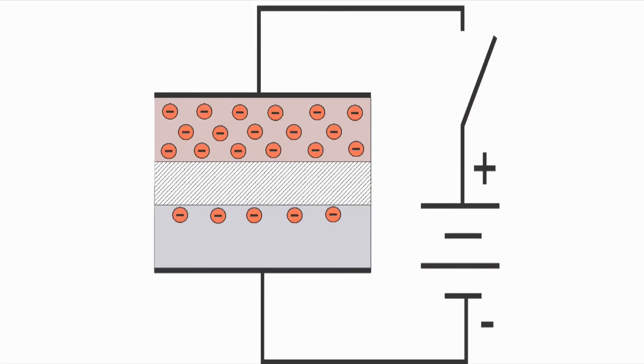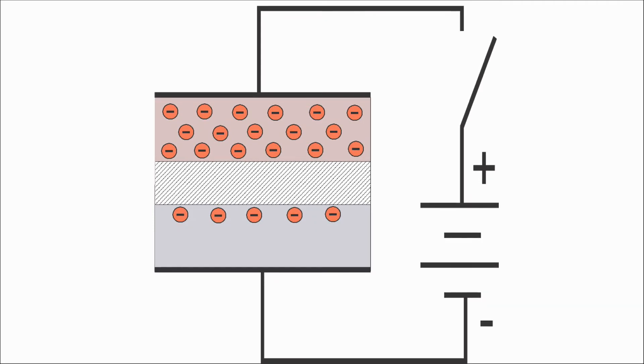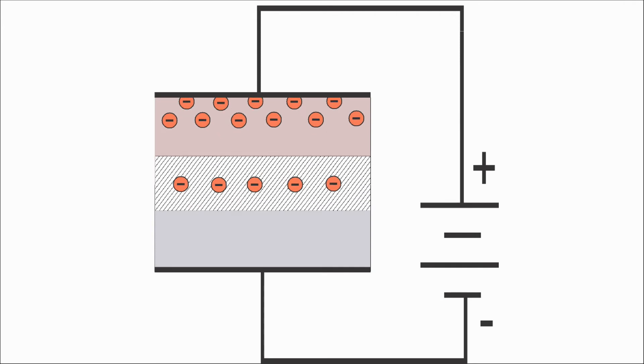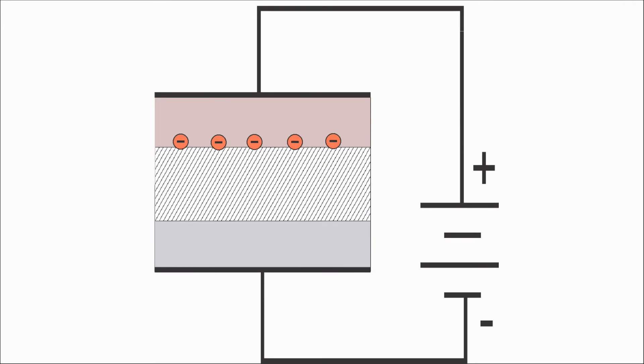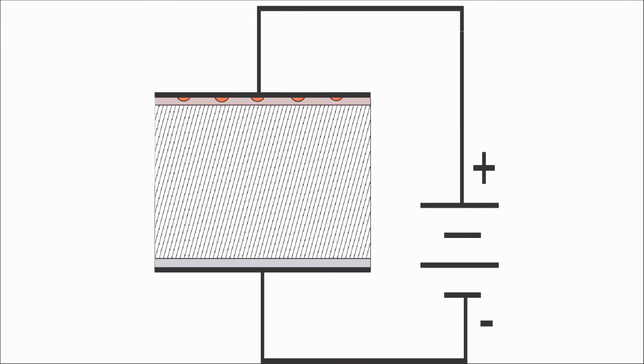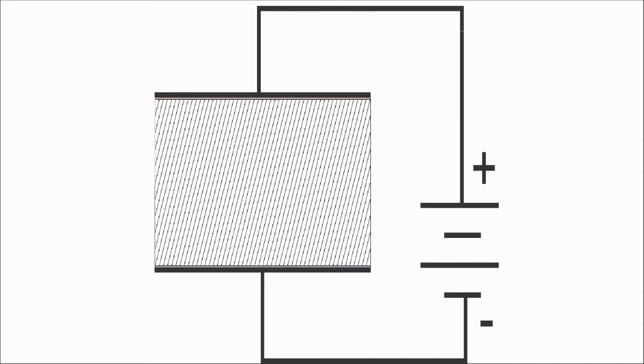Consider a p-n junction where the top electrical contact is transparent. Let's call this a photodiode. If the battery is switched on momentarily, the battery's voltage reverse biases the p-n junction. This creates a large depletion region. As we discussed earlier, the depletion region has an electric field across it.